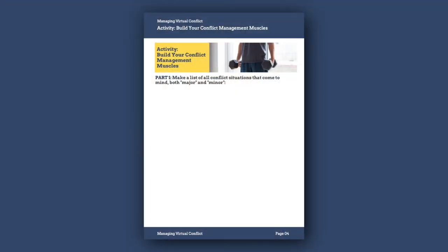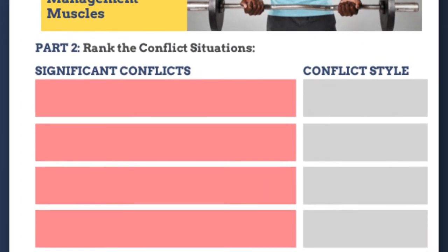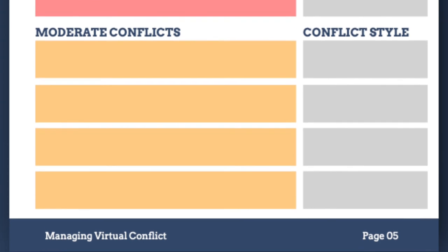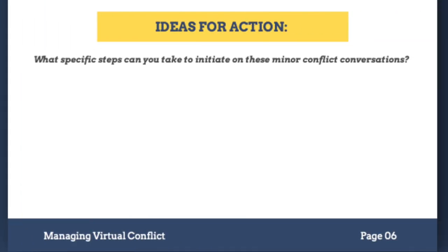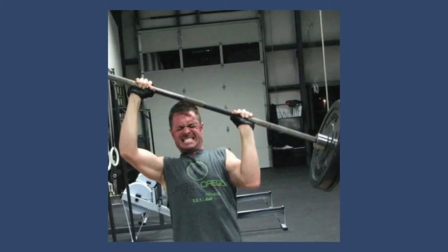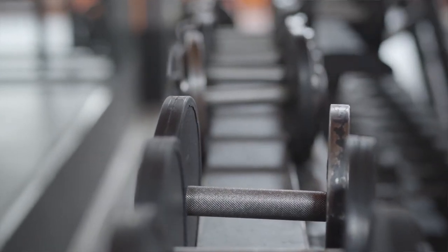Grab a piece of paper, a notebook, or use your keyboard and make a list of the conflicts you're currently facing or know you need to address. You can make that list in the workbook on page 4. Then on pages 5 and 6, rank these situations from significant to those you consider more minor. Try to think of situations across that spectrum, and at the bottom of page 6, list what steps you can take to address the relatively minor conflict situations first. As we go through the course, refer back to this list and consider where you can apply these insights and strategies.